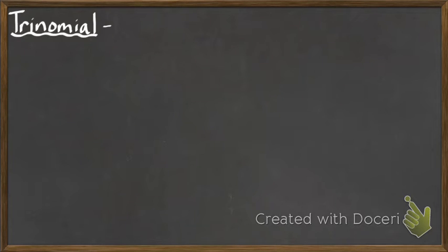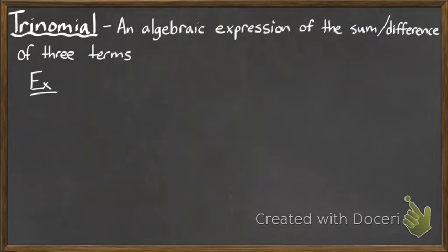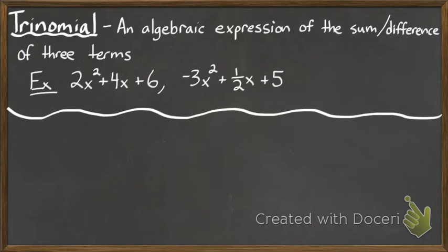What about a trinomial? A trinomial is an algebraic expression that is the sum or difference of three terms. For example, 2x squared plus 4x plus 6 would be one example, or negative 3x squared plus one-half x plus 5. These are all examples of trinomials.